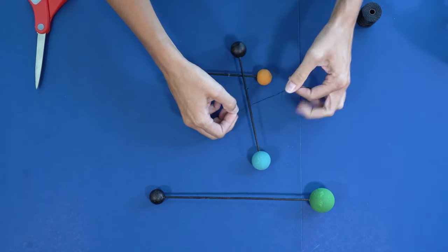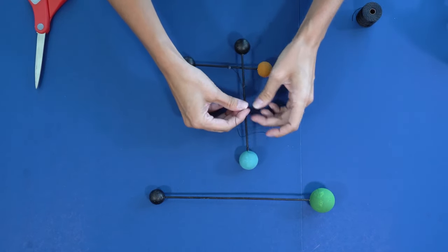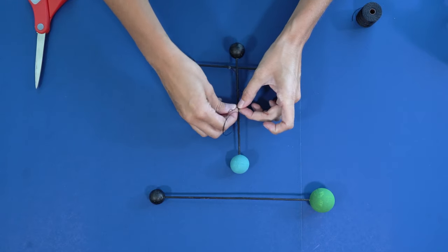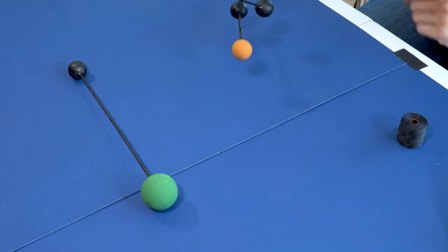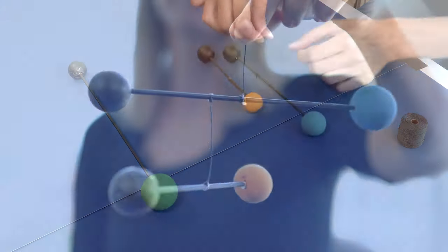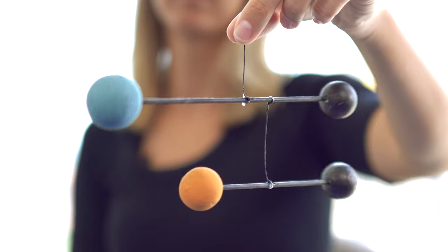Now we're ready to attach the next string, and this means we're going to be balancing both tier 1 and tier 2. Remember, always move in the direction of the ball that's lower. Alright, that looks perfect.